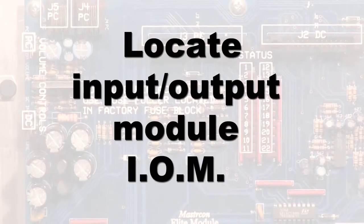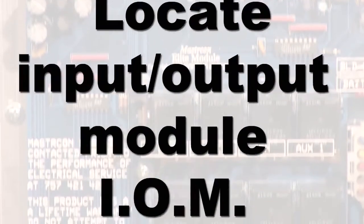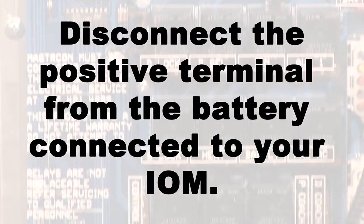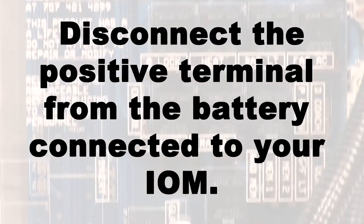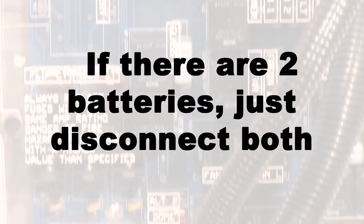Next, locate your vehicle's input-output module, also known as IOM. Disconnect the positive terminal from the battery connected to your IOM. If your vehicle has two batteries, it's recommended to disconnect both.